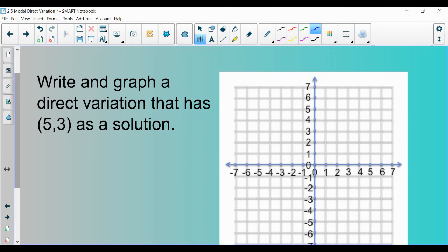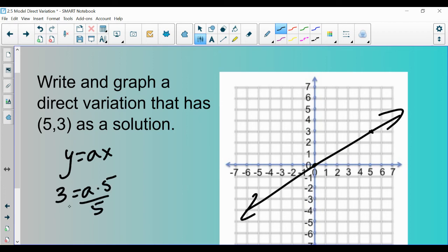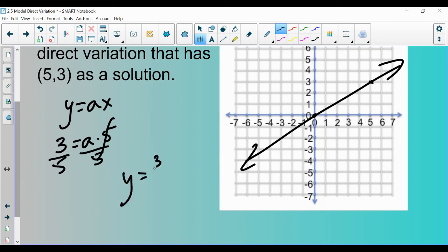You guys go ahead and pause it here. Do this one really quick. Make sure that you guys have the correct answer and a good understanding of this. What we would do is we'd take the point 5, 3. We know it goes to the origin. I've graphed it. Pretty simple. We also know direct variation looks like y equals a times x. I can plug in the x and the y value. And I get an a value of 3 halves. And that's my equation.